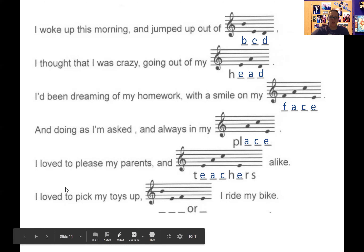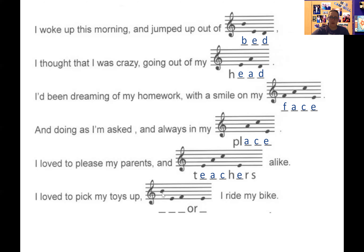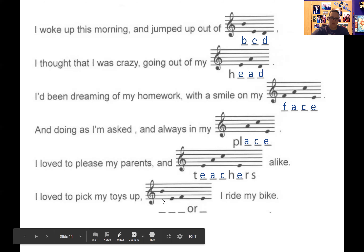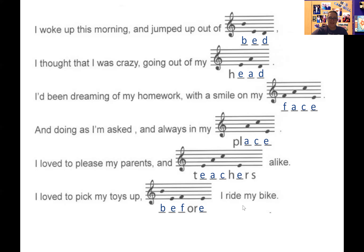I loved to please my parents and teachers alike. 'I loved to pick my toys up...' — are we on a line or a space? It's on the lines, so we use our sentence: 'Every Good Burger' — the letter B. First line is E. First space is F. And another E. So that's B, E, F, O, R, E — 'before.' I loved to pick my toys up before I ride my bike.